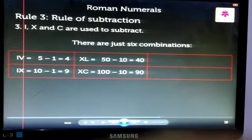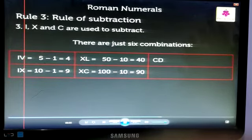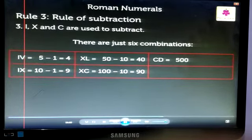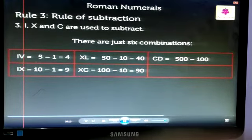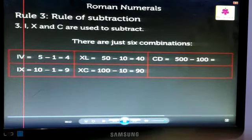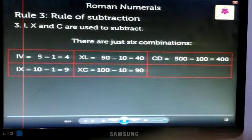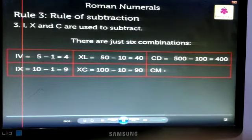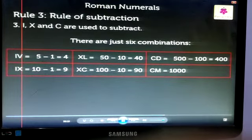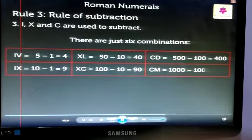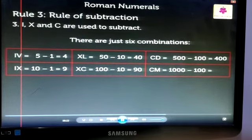CD is equal to 500 minus 100, which equals 400. CM is equal to 1000 minus 100, which equals 900.